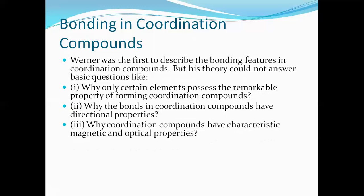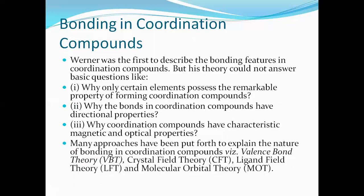Why do compounds have characteristic magnetic and optical properties? When placed in a magnetic field, certain complexes are attracted or repelled. Certain complexes can rotate the plane of polarized light clockwise or anti-clockwise, while others cannot. To explain all these properties, different bonding theories were put forward: the valence bond theory, crystal field theory, ligand field theory, and molecular orbital theory.